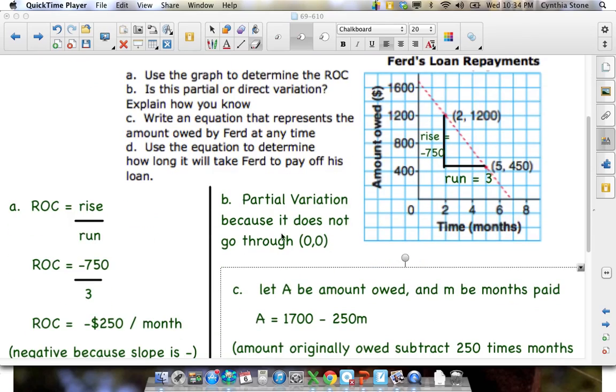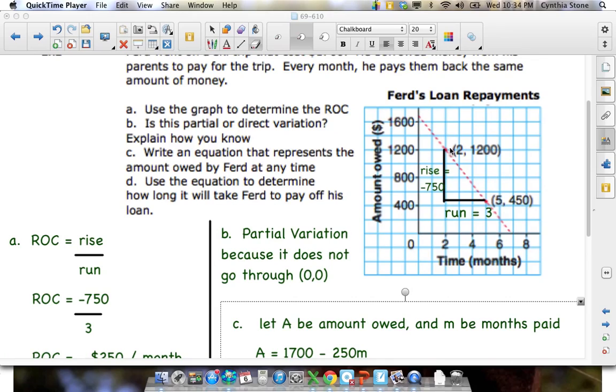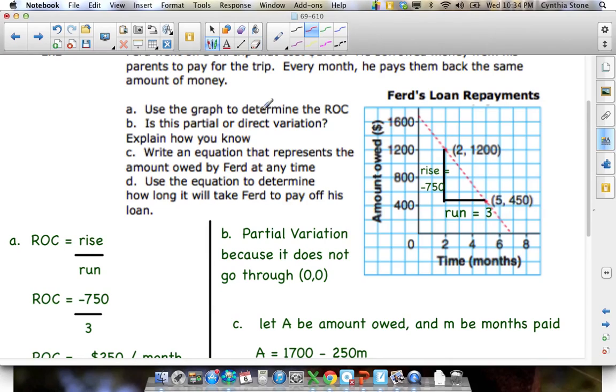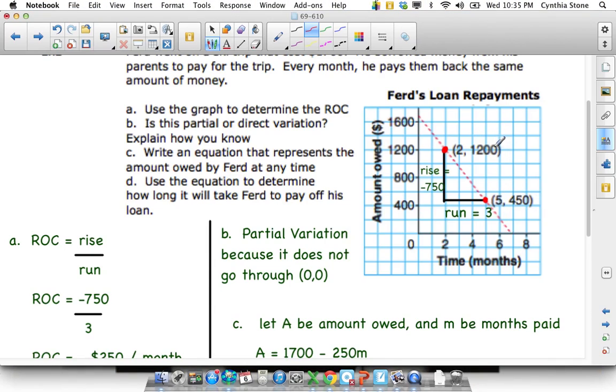Remember, rate of change is rise over run. So looking at this graph, it's good to make a little triangle, and the rise is the difference between the two points that were given. You can kind of see the two points there, and it gives you even the data points. So I use those. You don't have to use those. You could use any two points you want, as long as they're on the line. My rise then is this one minus this one. So it starts here and it moves to here.